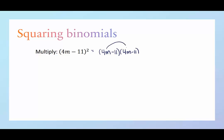We're going to do 4m times 4m, which will be 16 because that's 4 times 4m squared. 4m times minus 11 will be minus 44m. Here we have minus 11 times 4m will be another minus 44m.